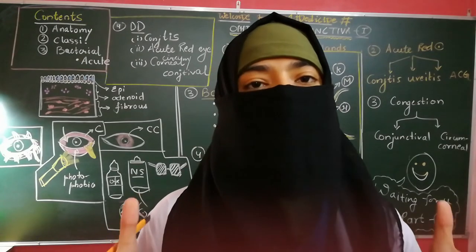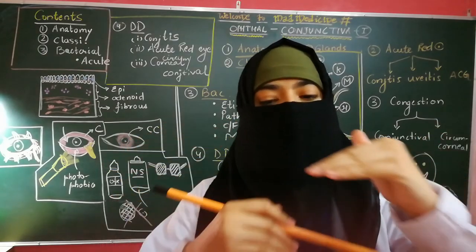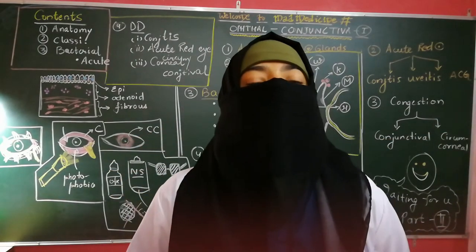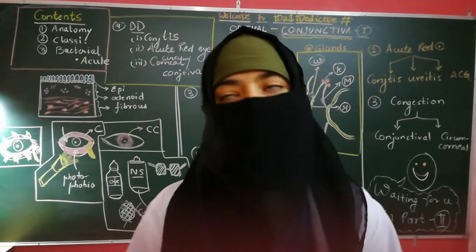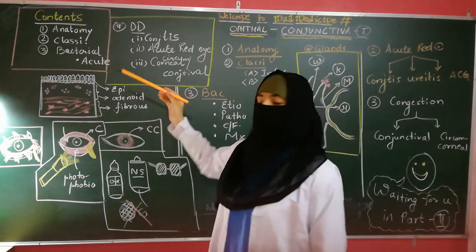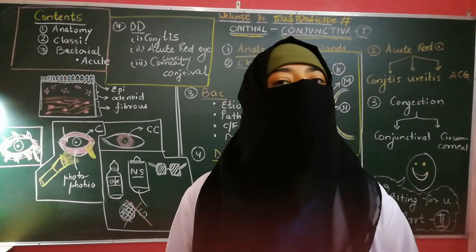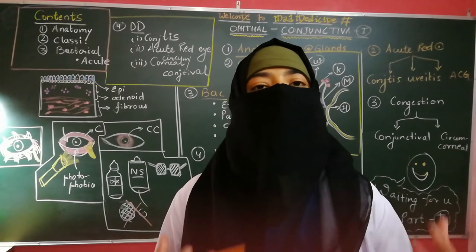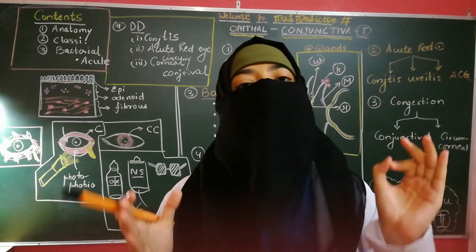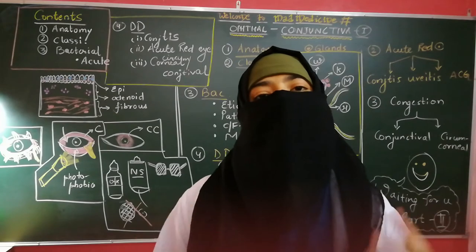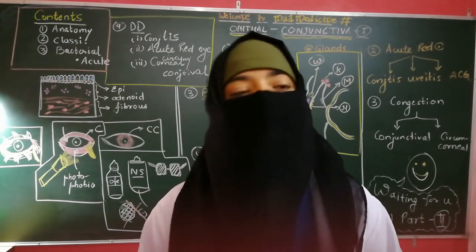Starting with the anatomy of the conjunctiva: the conjunctiva is a transparent mucous membrane present over the sclera. It is made up of three layers. The topmost layer is the epithelium, then you have an adenoid layer or lymphoid layer, and then a fibrous layer. The epithelium is variable — it is a multi-layered, stratified squamous non-keratinized epithelium, and the number of layers differs from place to place.